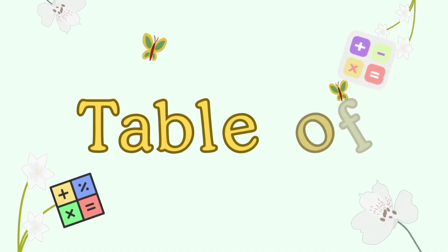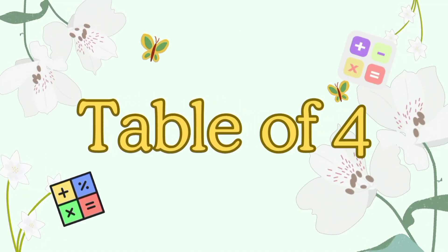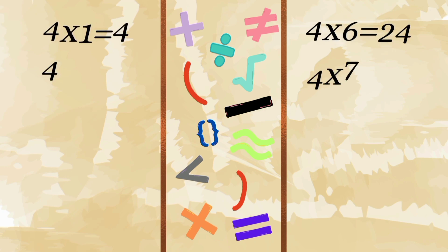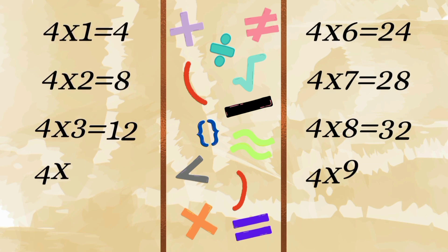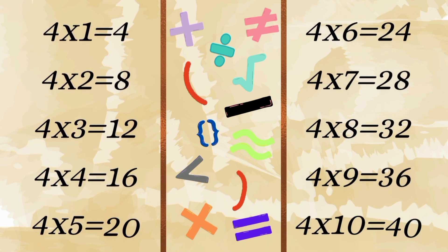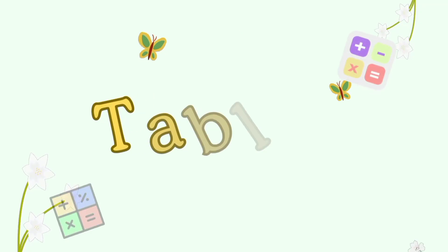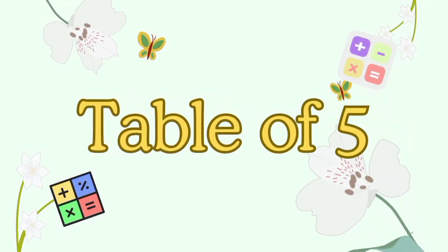Table of 4: 4×1=4, 4×2=8, 4×3=12, 4×4=16, 4×5=24, 4×6=24, 4×7=28, 4×8=32, 4×9=36, 4×10=40.